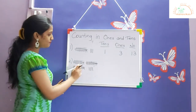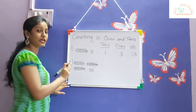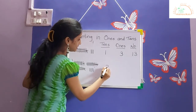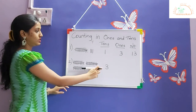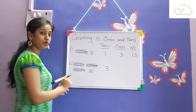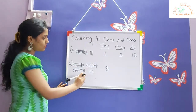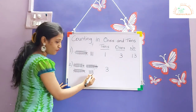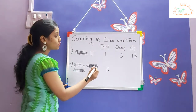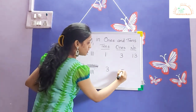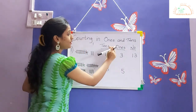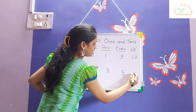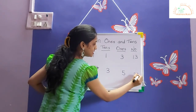The next example: we have three bundles, so we have three tens. We write three in the tens column. The remaining ones are one, two, three, four, five. So we have five ones in the ones column. Three tens and five ones is equal to thirty-five.